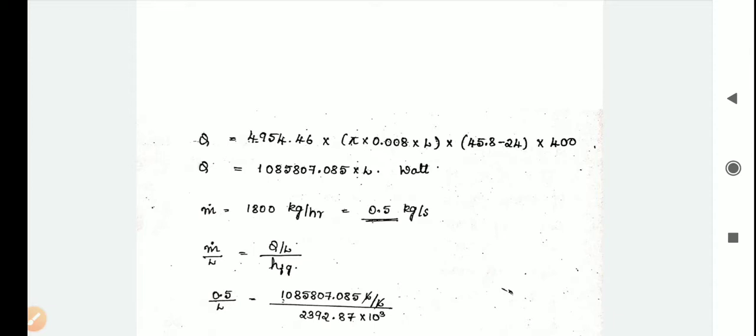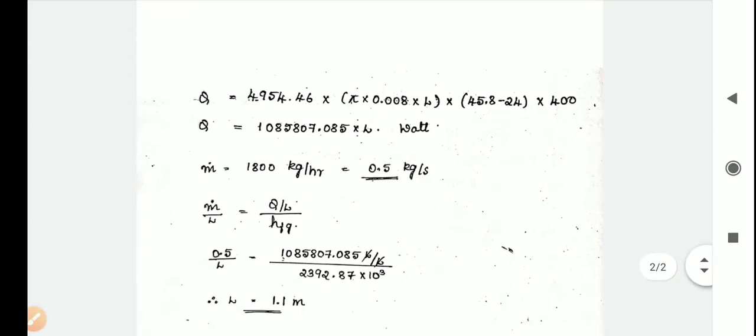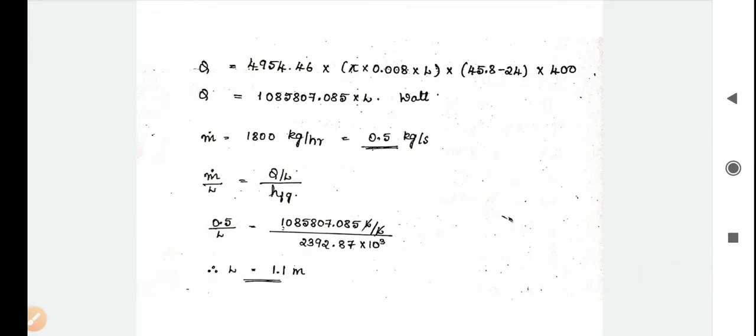In the question, m value is given as 1800 kg per hour, converted into kg per second equals 0.5 kg per second. We have to find the length, so m divided by L equals Q by L divided by h fg.